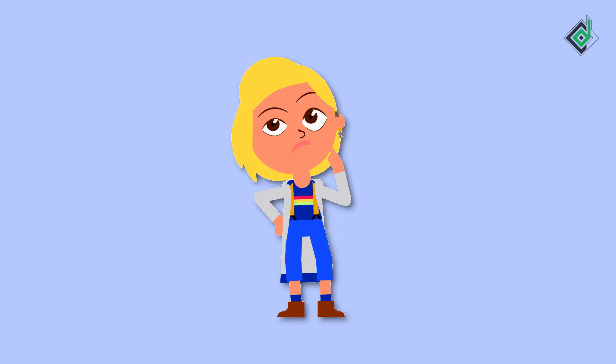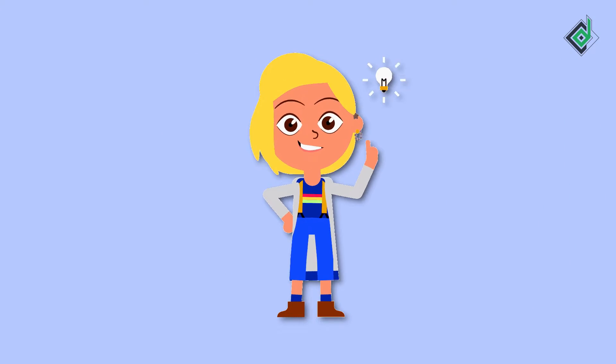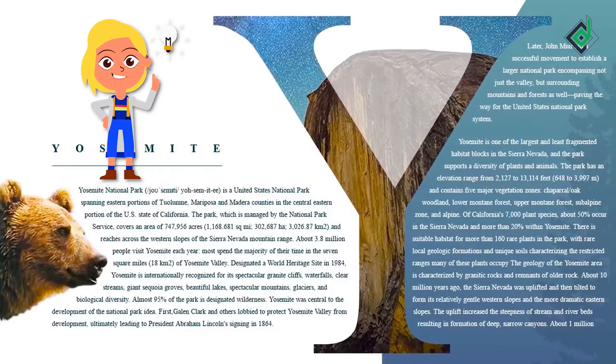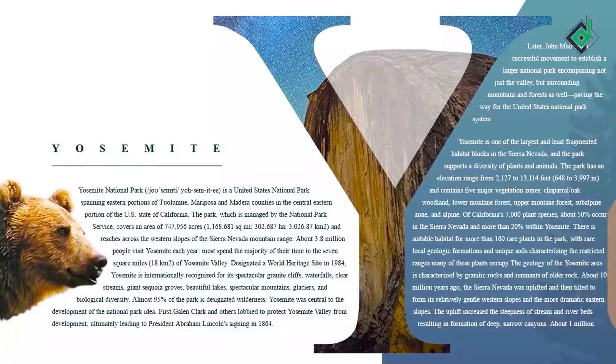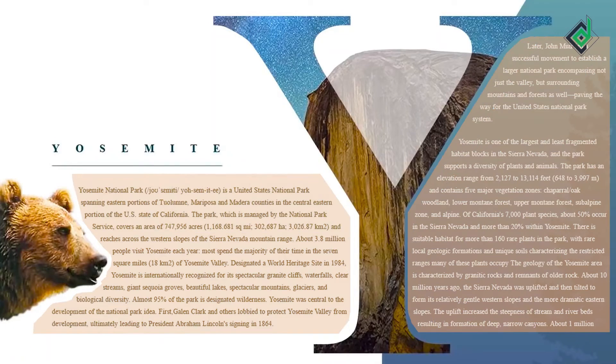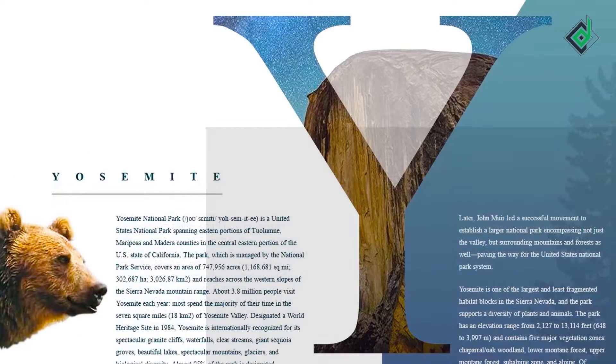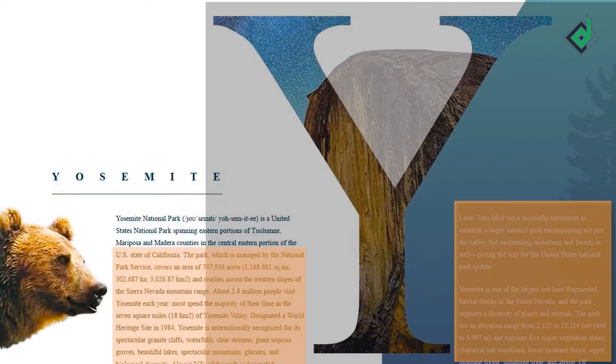Let's say that one of your creative graphic designers comes up with this idea. It looks good, amazing. But the problem is, how will you convert this design into HTML and CSS code when every element in HTML and CSS behaves as a box?